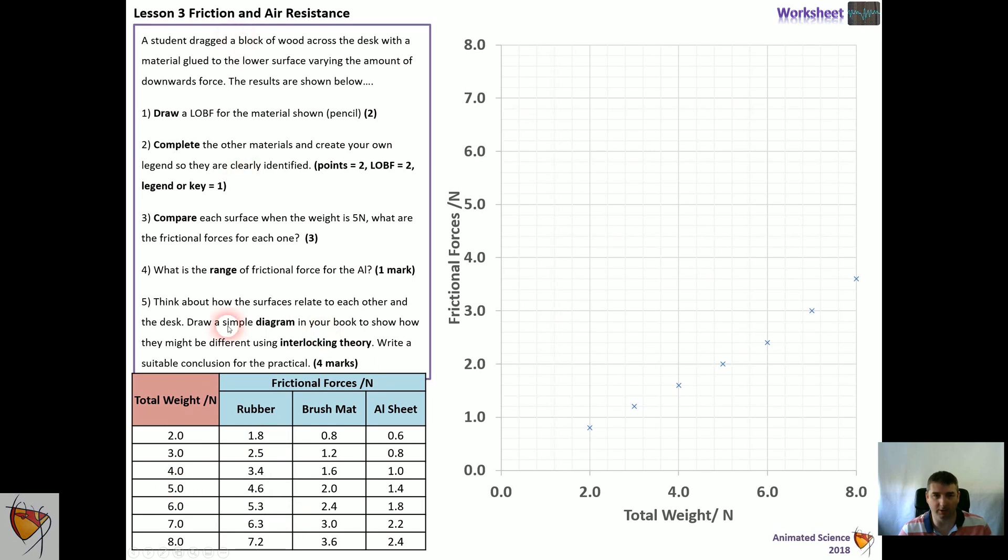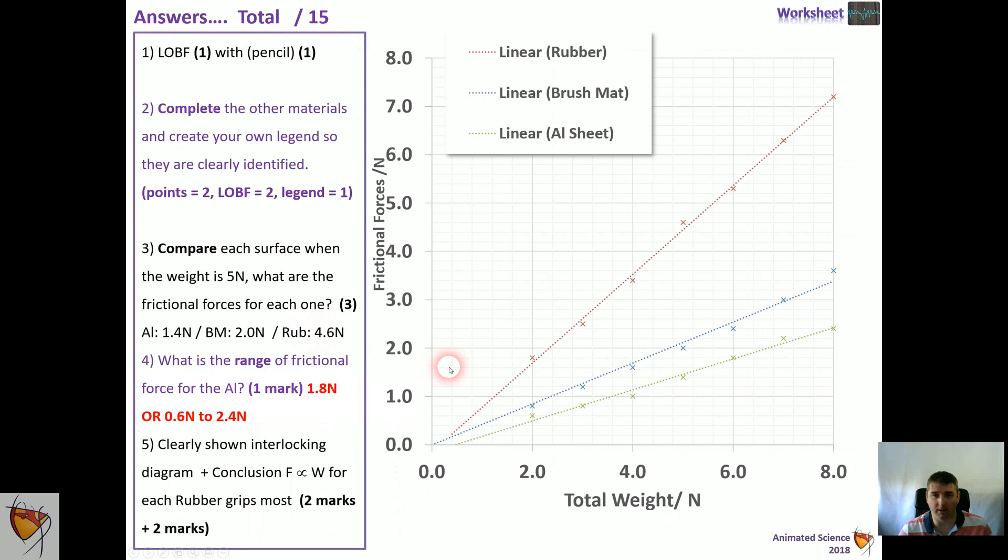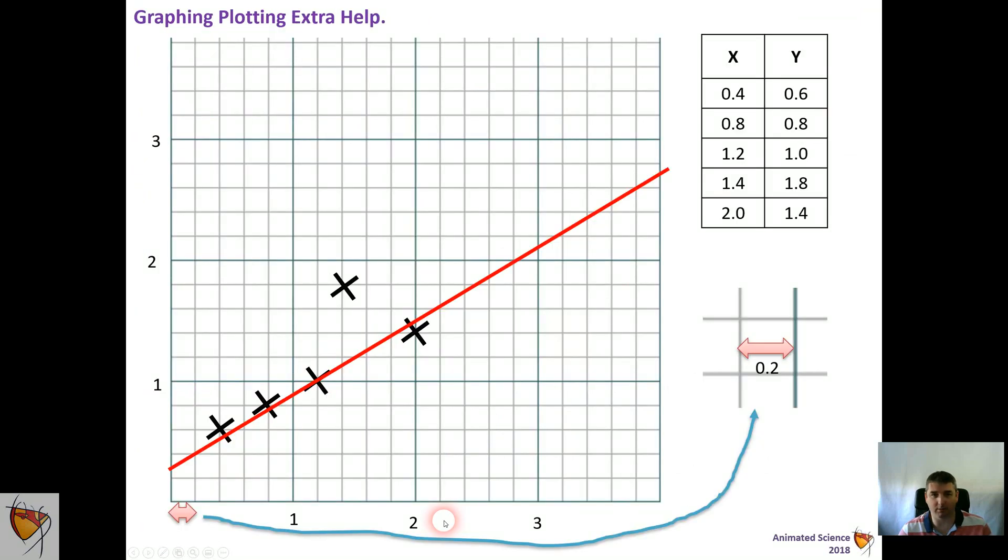Results are you get a straight line graph. You've got all the answers there. You can mark it through yourself. That's a little bit of help if you struggle to plot graphs.